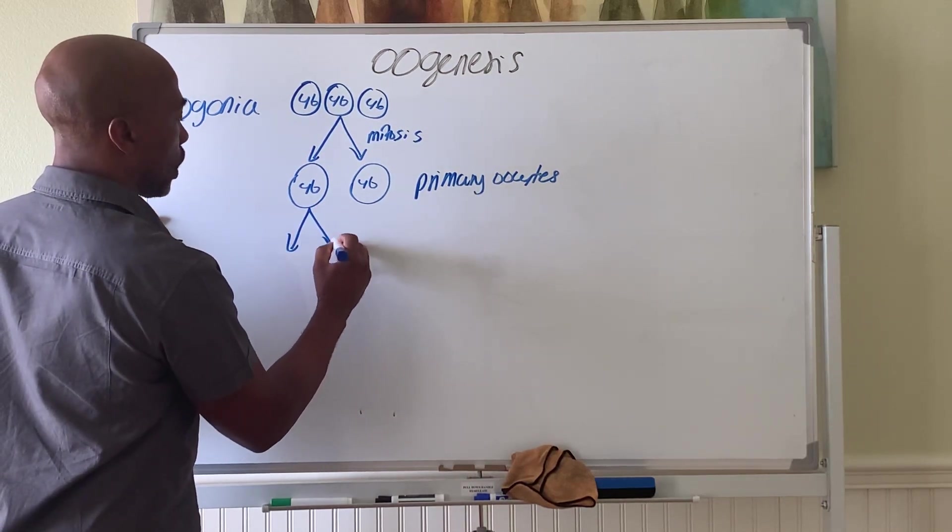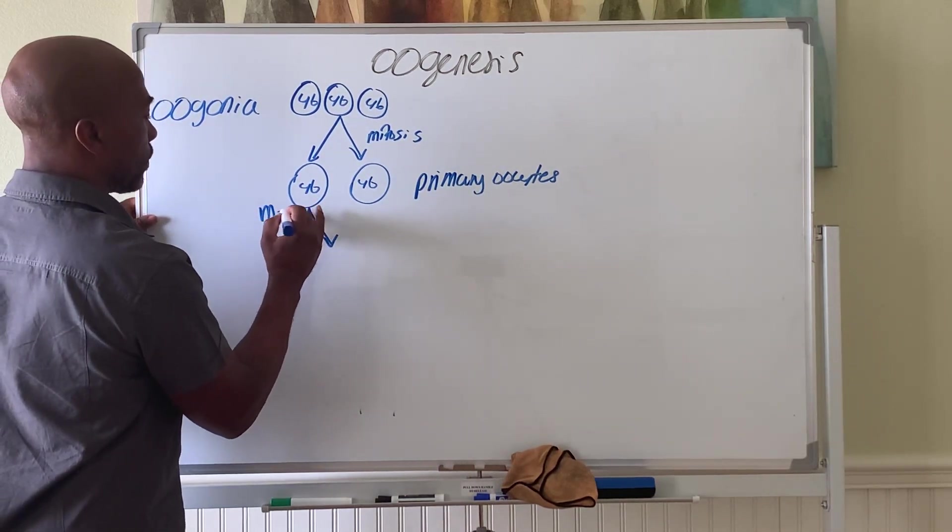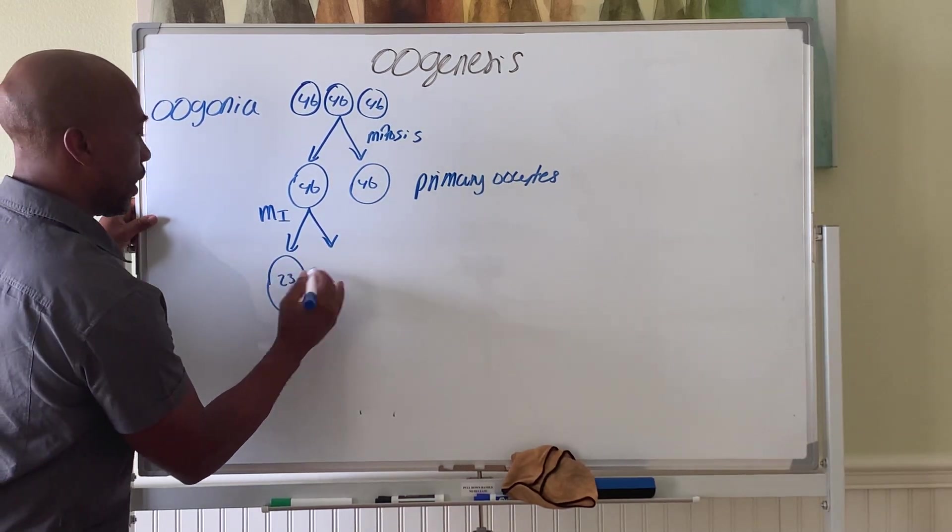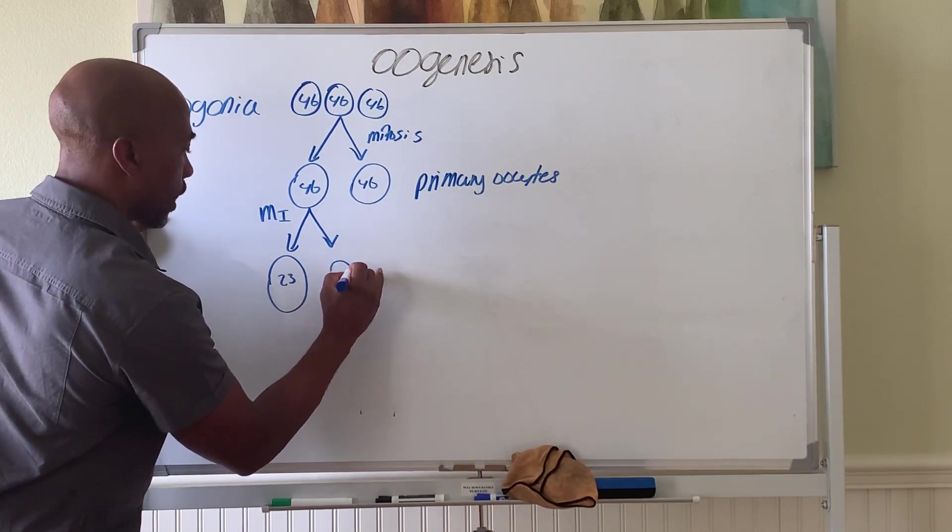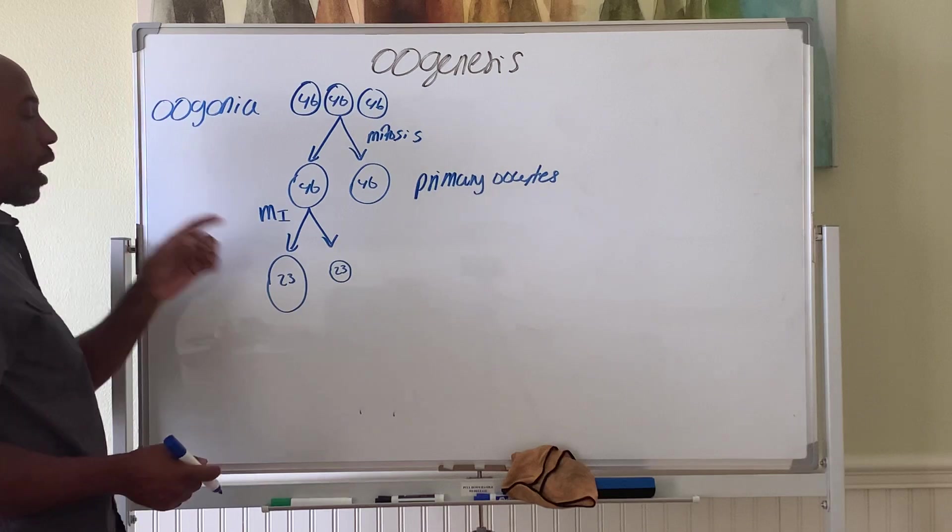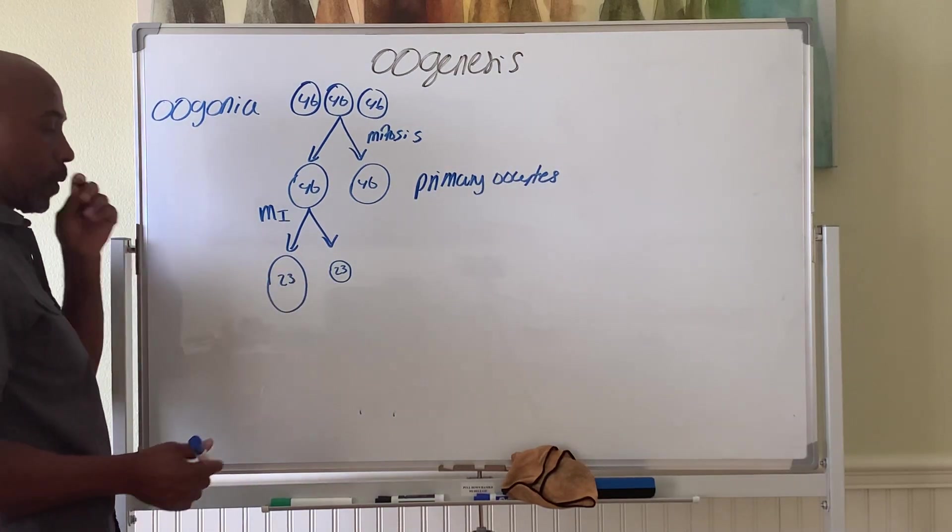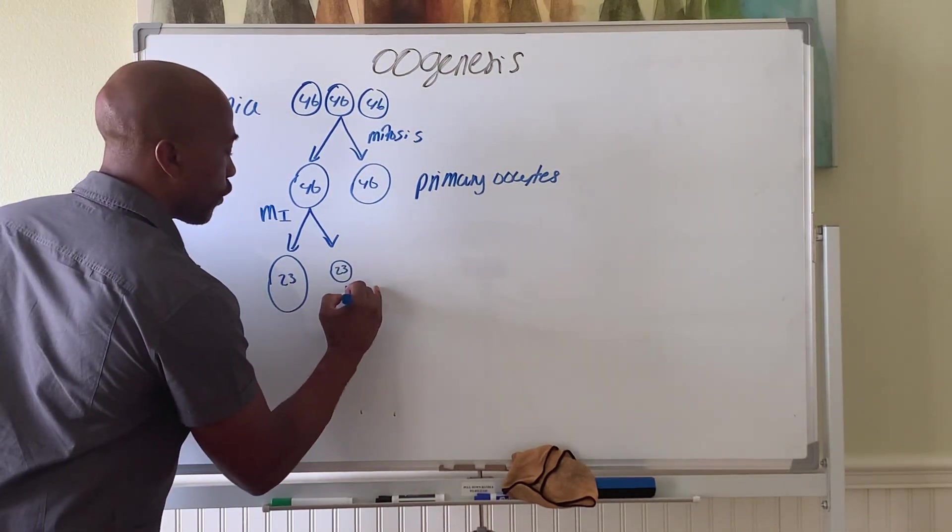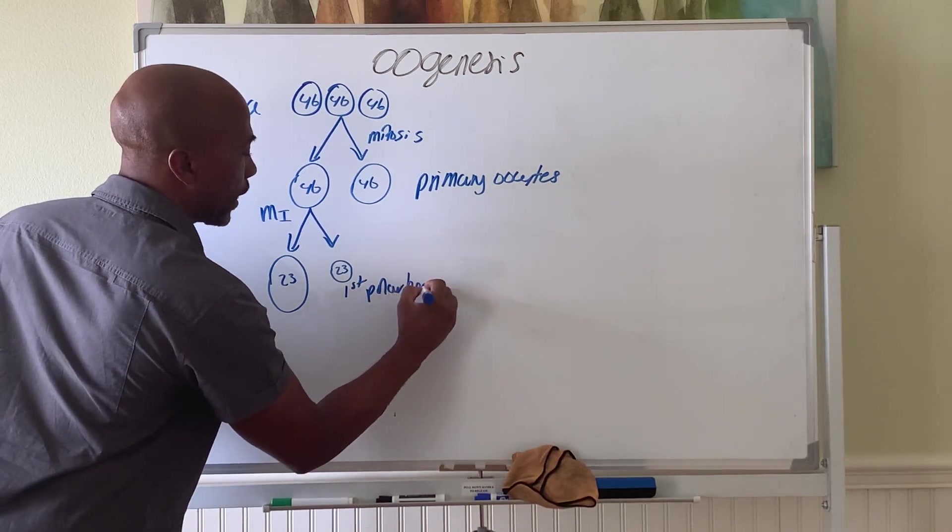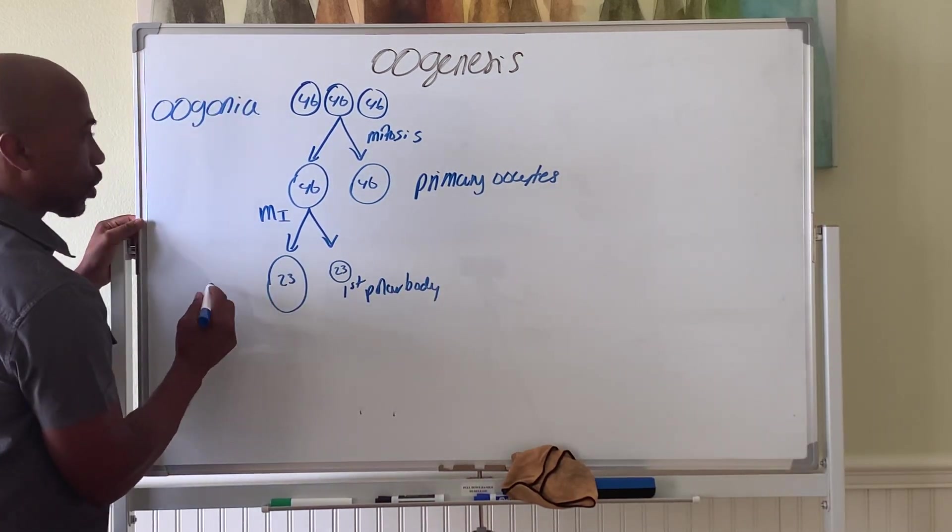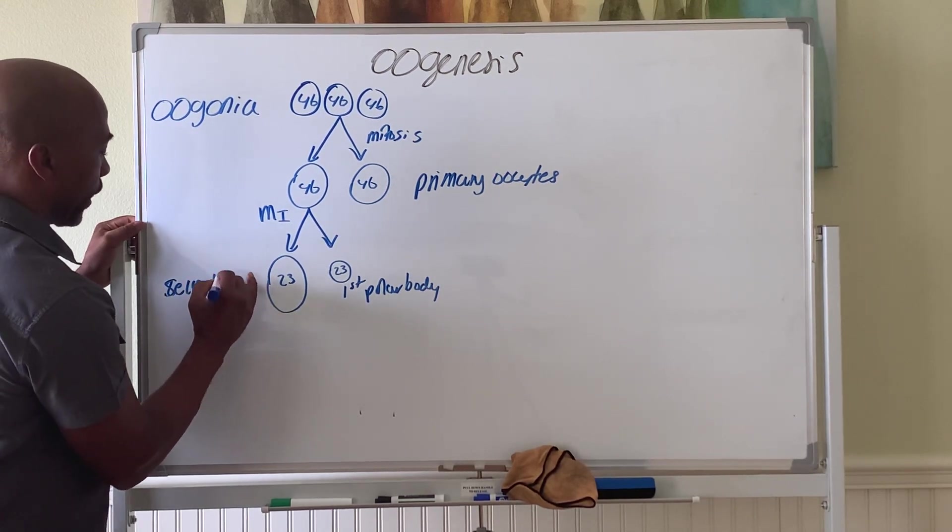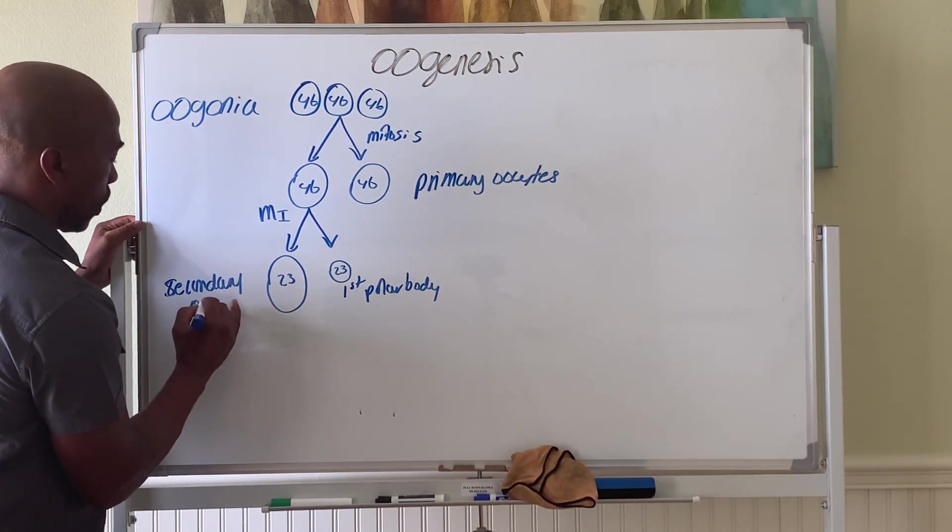This cell undergoes meiosis one to form one cell with 23. The small little thing that also has 23 chromosomes, its only job is to take away the chromosomes. This one is called the first polar body, and this now is called your secondary oocyte.